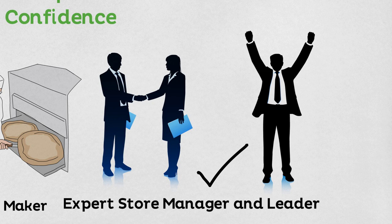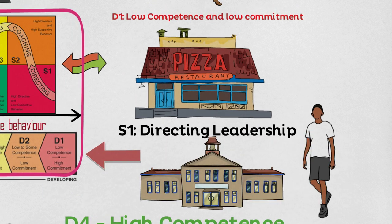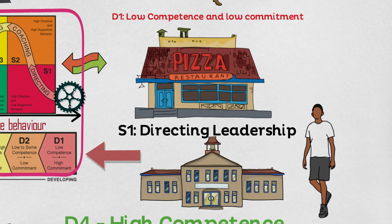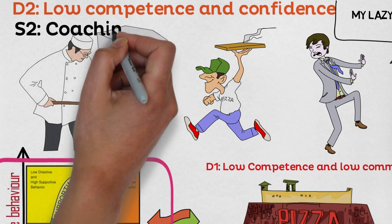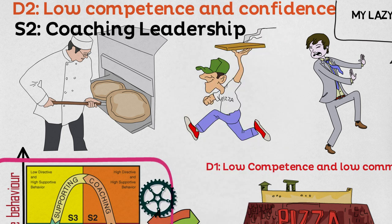Let's look at the different leadership styles and identify when each one is best to use. Telling — S1: this style involves the leader telling people what to do and how to do it. The S1 quadrant reflects directing behavior. New employees need high directive behavior and high supportive behavior — that is, they need a leader that tells them specifically what to do.